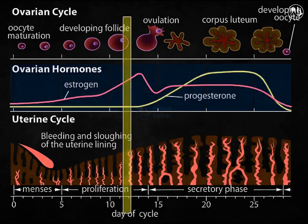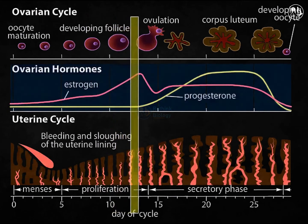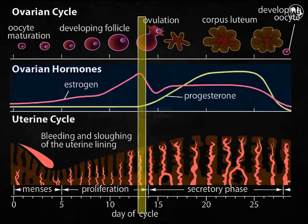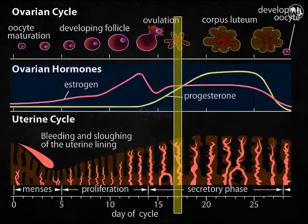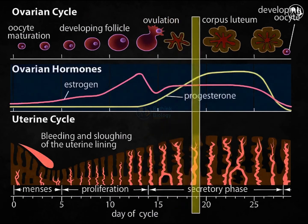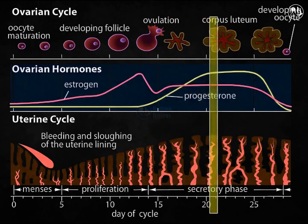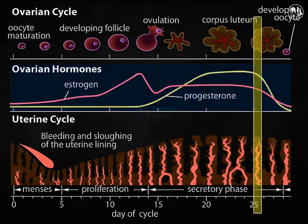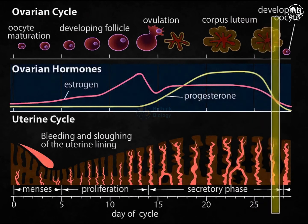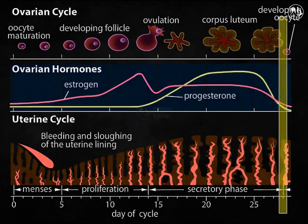Estrogen levels in the body peak just before ovulation. The corpus luteum, which develops from the follicle cells remaining in the ovary, releases estrogen and progesterone. These hormones keep the uterine lining at its thickest and most ready for embryo implantation. At the conclusion of the cycle, if the egg has not been fertilized or implanted, the corpus luteum breaks down and ceases releasing estrogen and progesterone, and menstruation begins as the uterine lining breaks down.